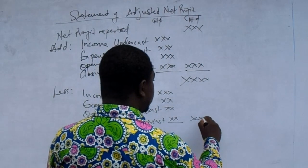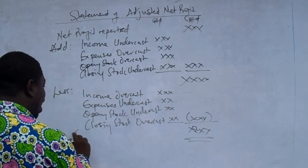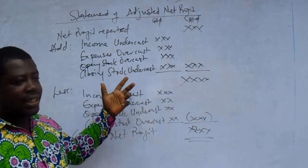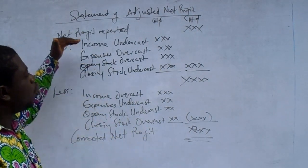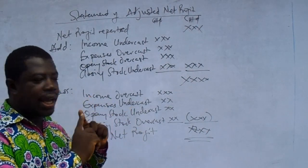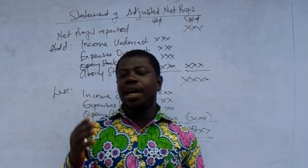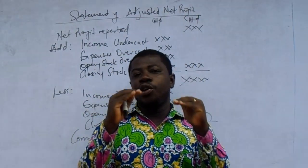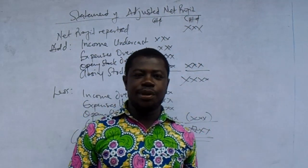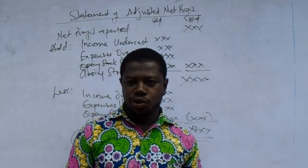When we take the deductions from the additions, we arrive at a figure called the adjusted or corrected net profit. Please understand that everything in this format is from the income statement. There is nothing like receivables, payables, non-current assets, capital, drawings, or liabilities here. When preparing the statement of adjusted net profit, you ignore everything that is a statement of financial position item — do not bring any asset or liability overcast or undercast into this statement.